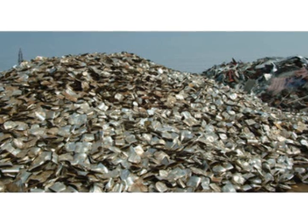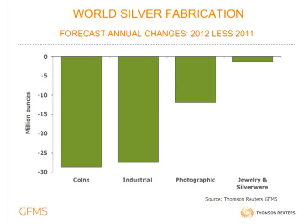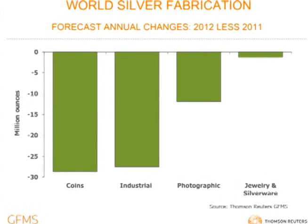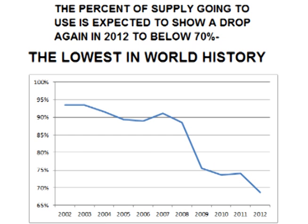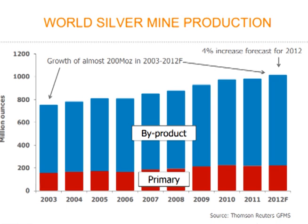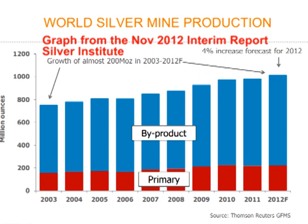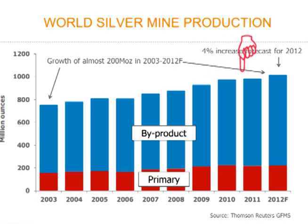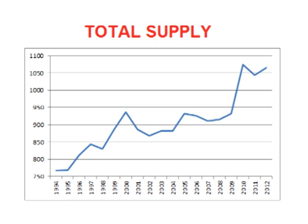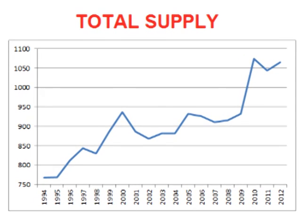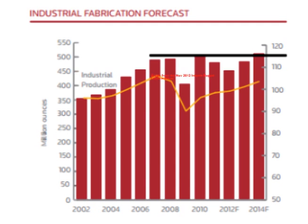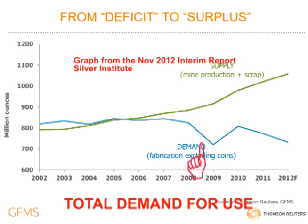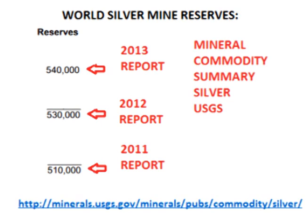What about silver ending up in landfills never to be found again? The total use for silver is declining, while at the same time the supply of silver is increasing. The percent of silver that goes to use each year is dropping fast. Silver mining is not about to run out or get really expensive. Supply from mining is increasing. Total supply is increasing. Industrial use declined three of the last four years. Total demand for use is down. And reserves have increased.